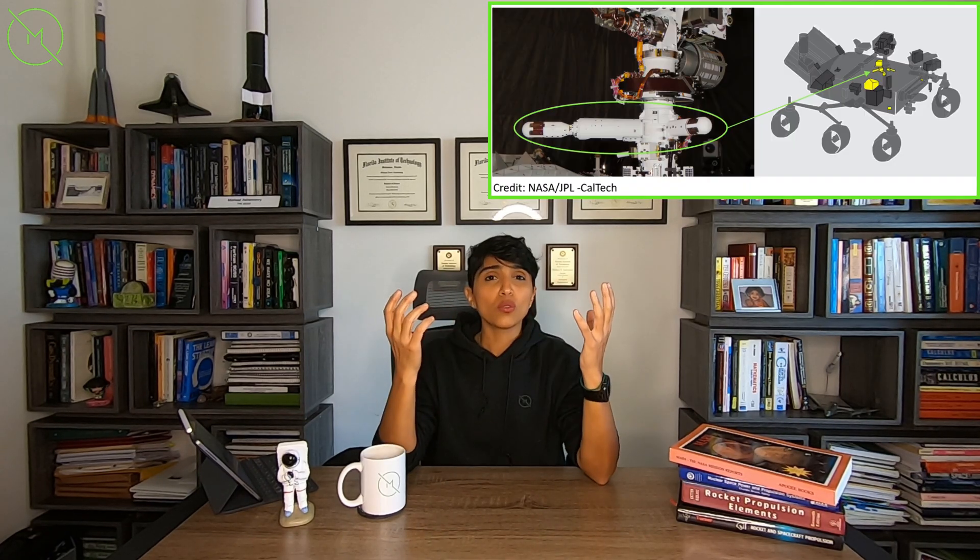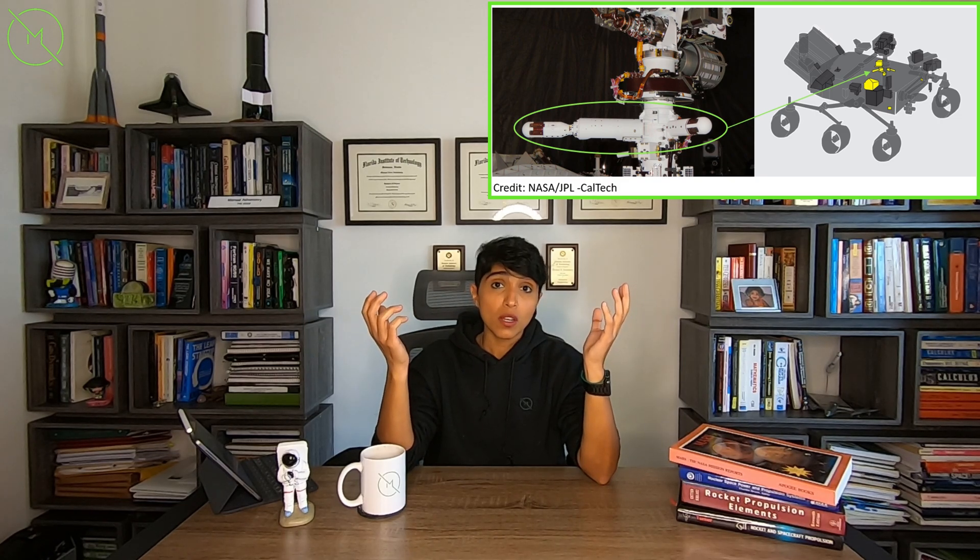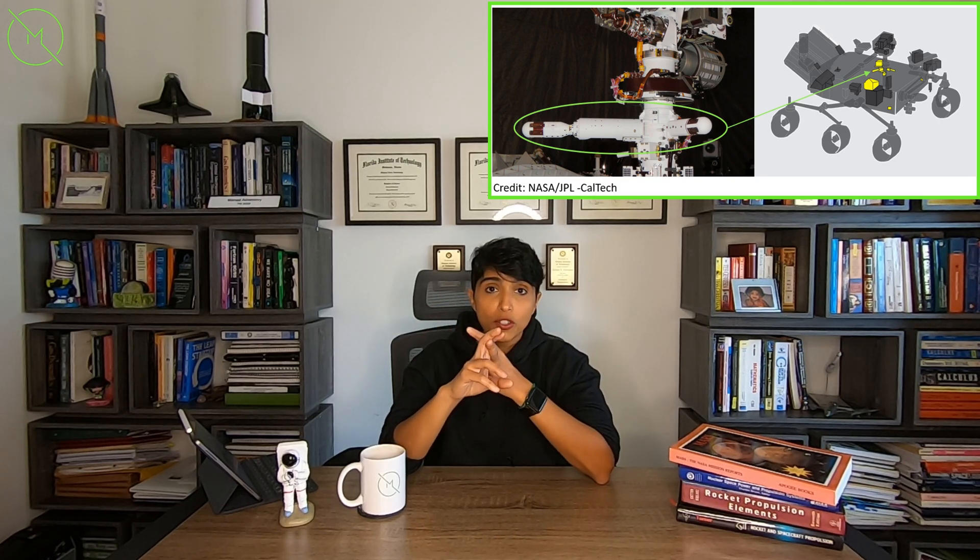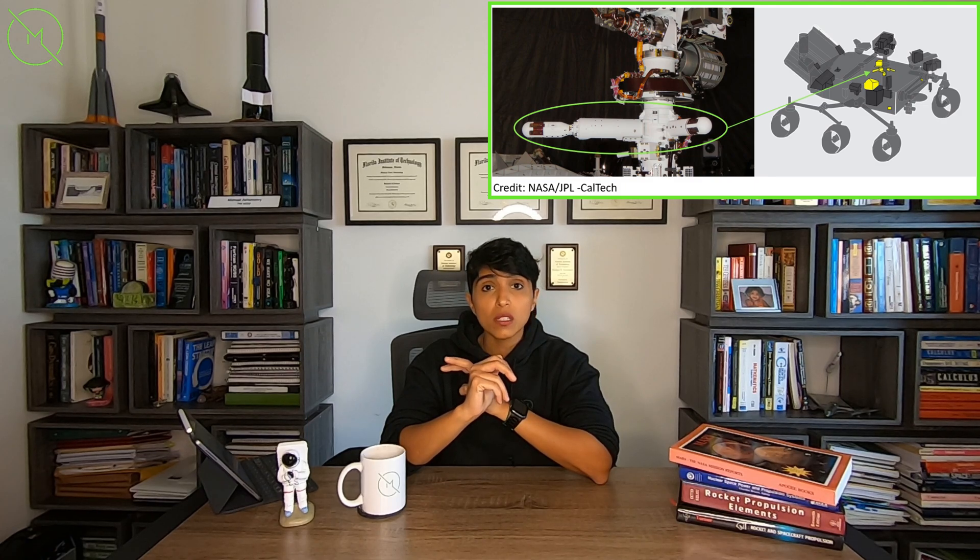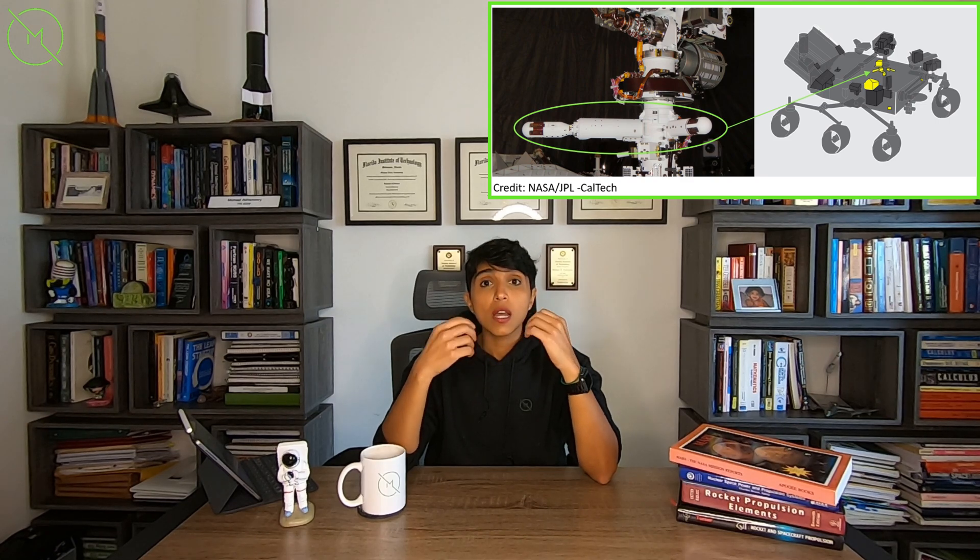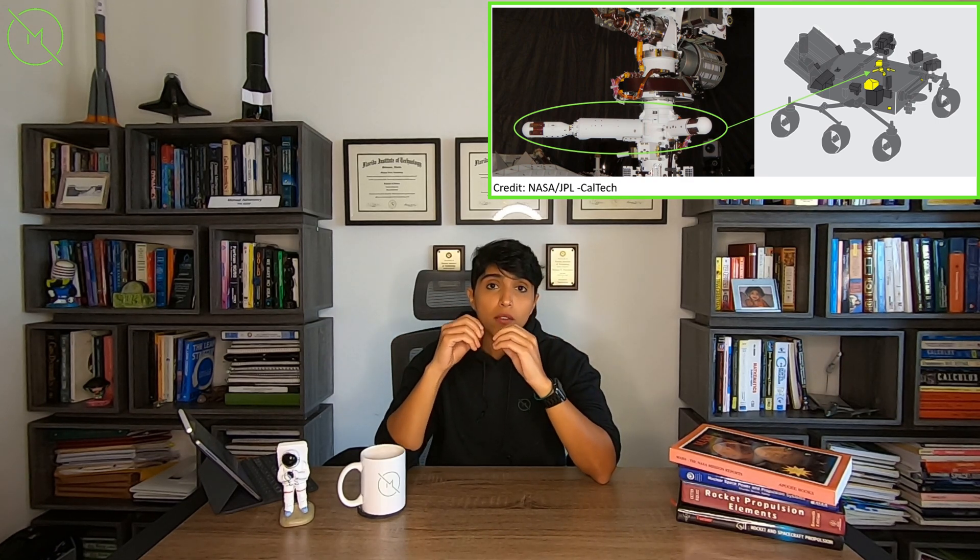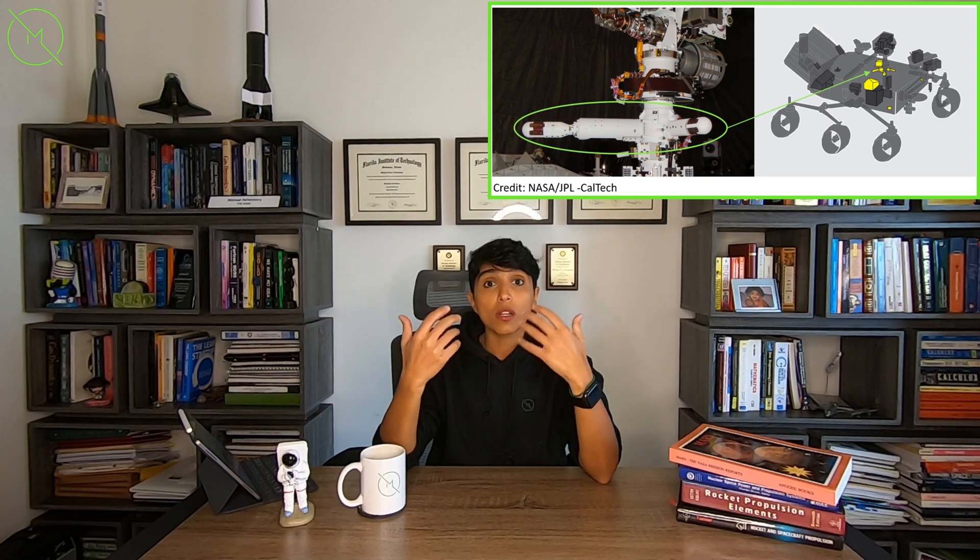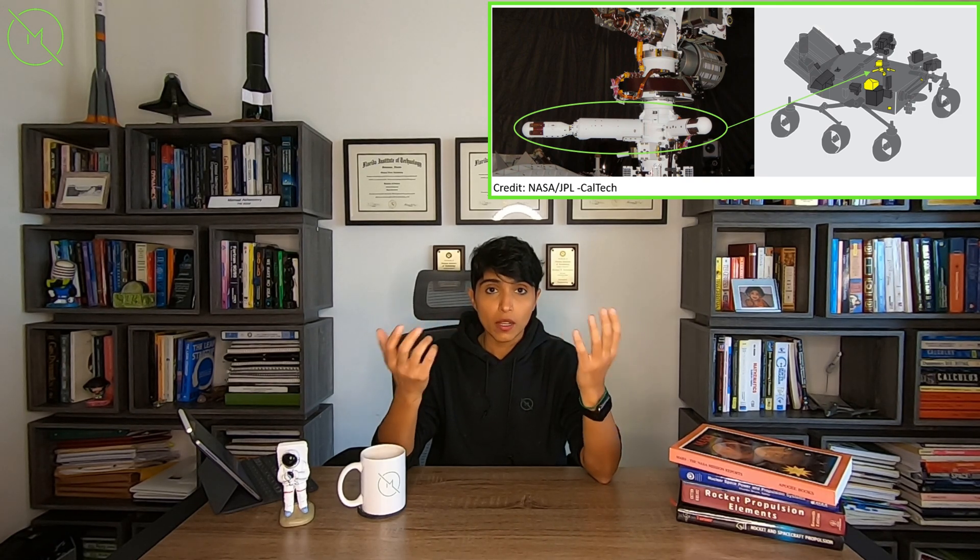Next up, from Spain, Spain has put an instrument called MEDA, M-E-D-A. What does that stand for? Mars Environmental Dynamics Analyzer. So what does it do? It's a set of sensors that can measure temperature, pressure, wind direction and speed. It can also measure the relative humidity in the atmosphere, as well as detect the dust, the shape and the size of the dust, so we can understand what these look like on Mars.